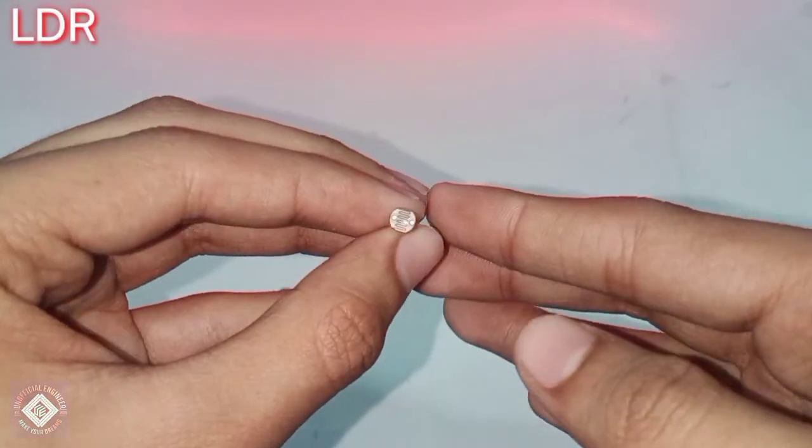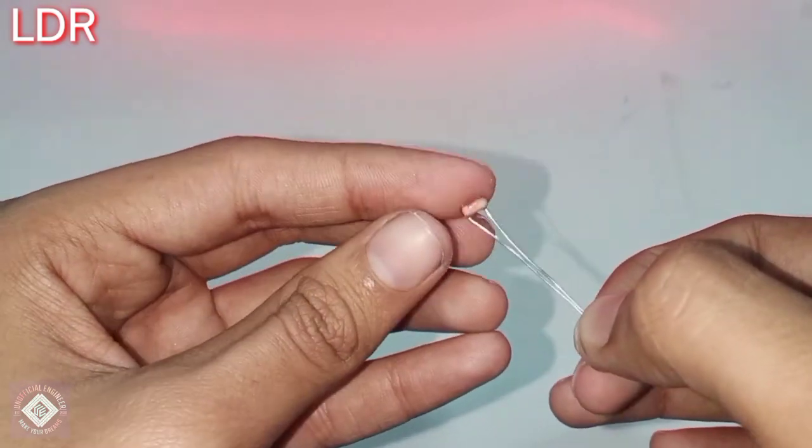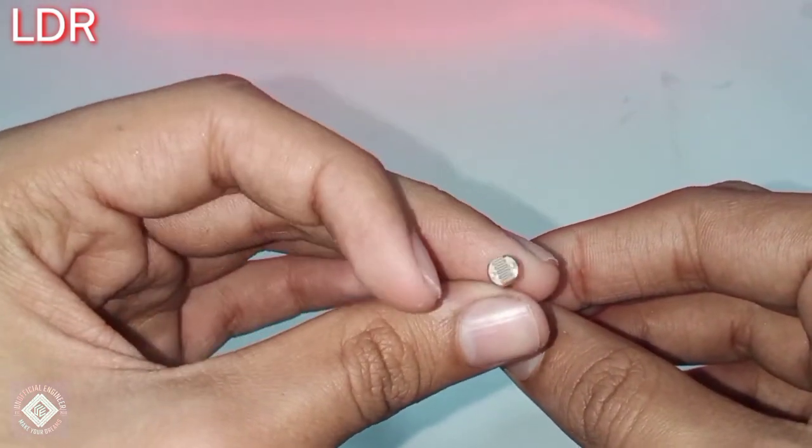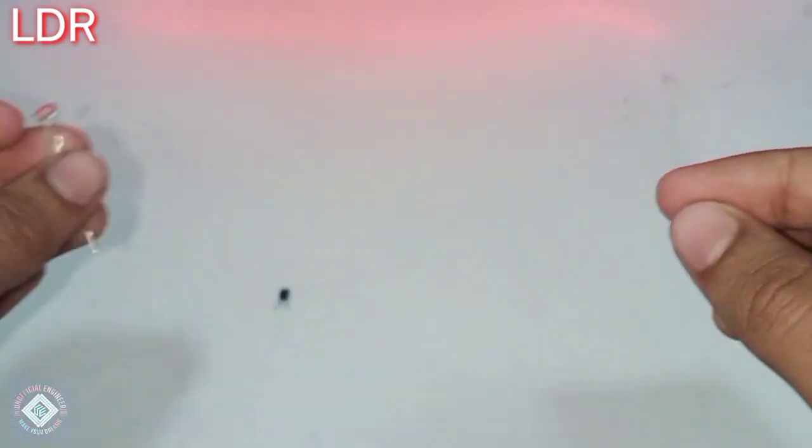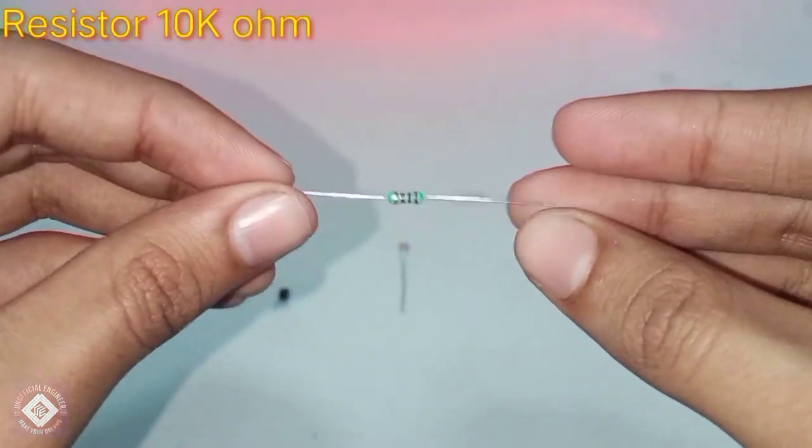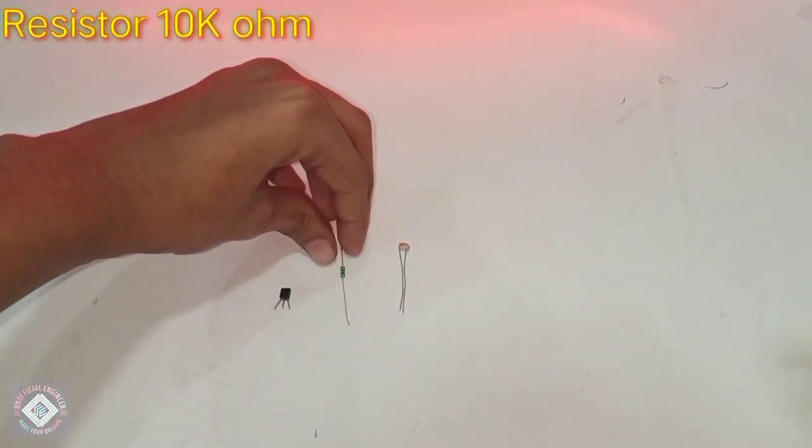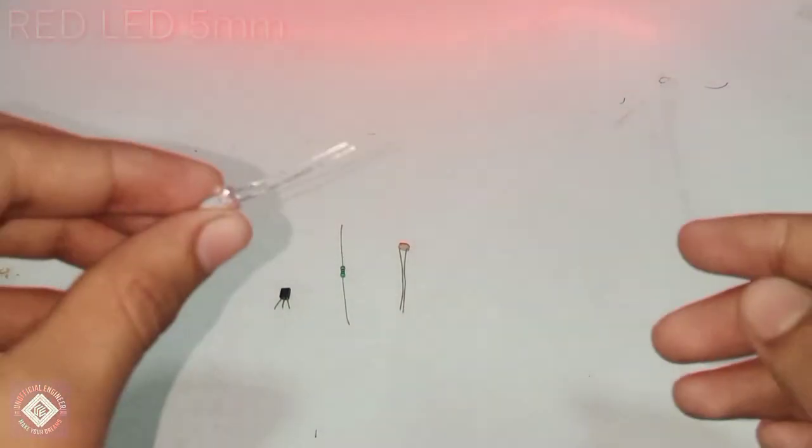After this we need the main part of this project, the heart, the light dependent resistance. This sensor will tell how much light is falling on it and will tell the transistor to regulate the voltage output. Here I am using a 10k resistance. If you're using different transistors, your value may differ slightly, you have to experiment with that.